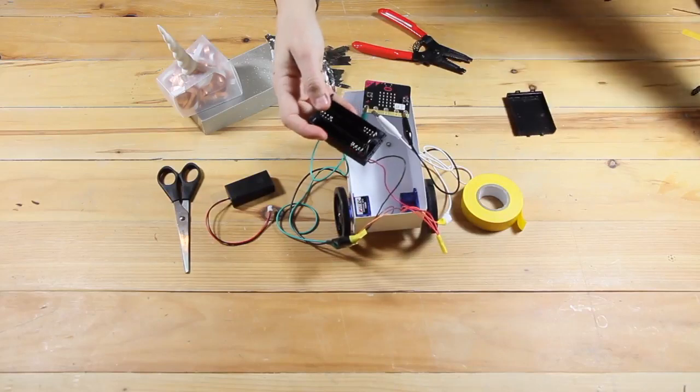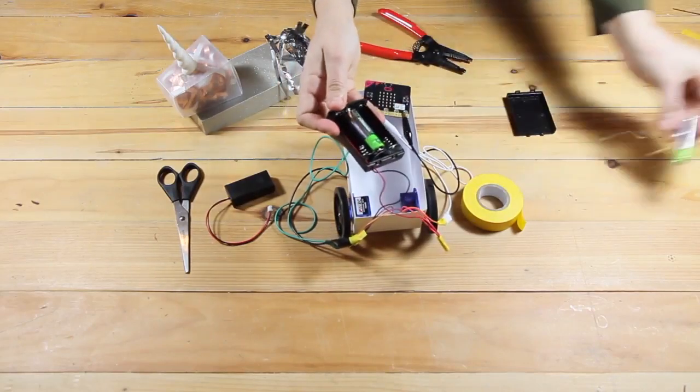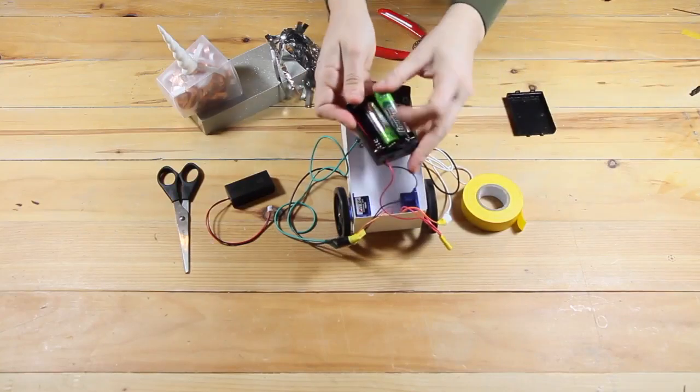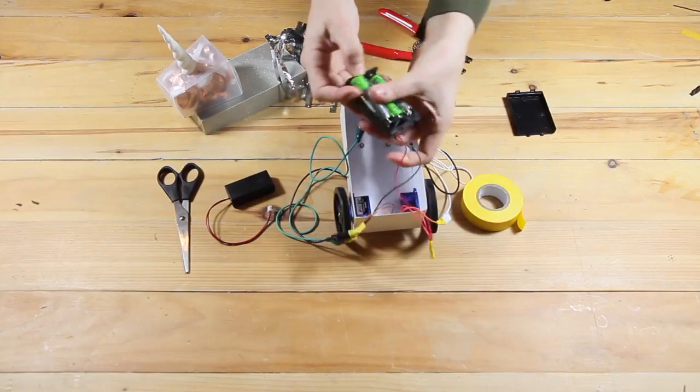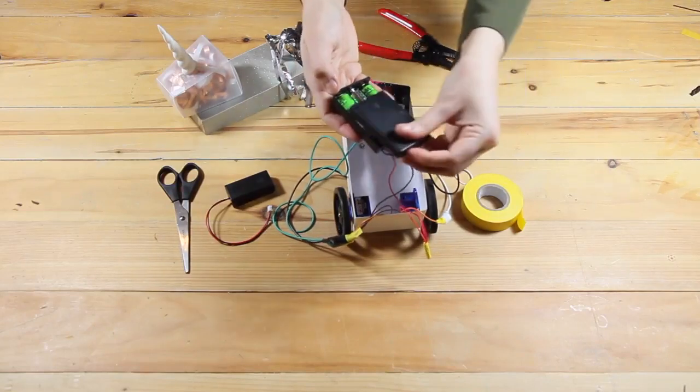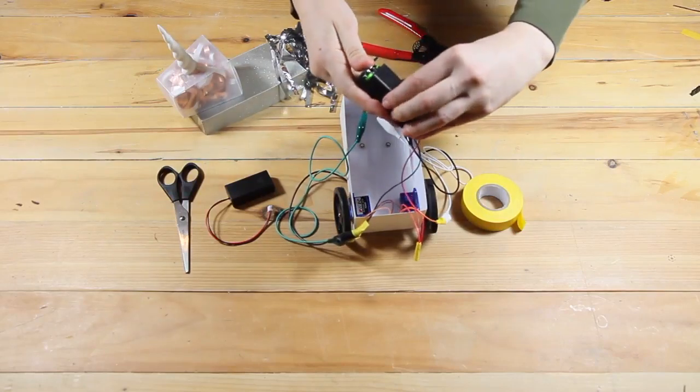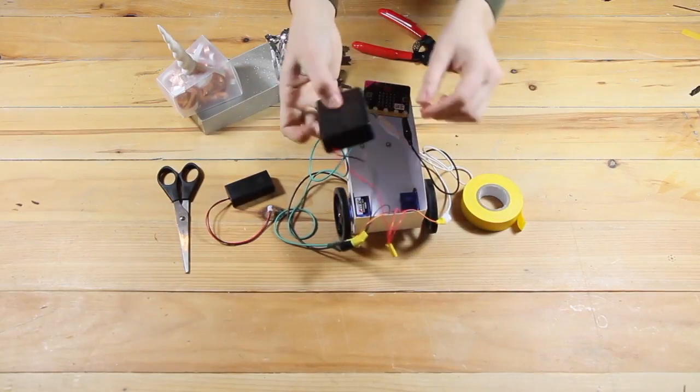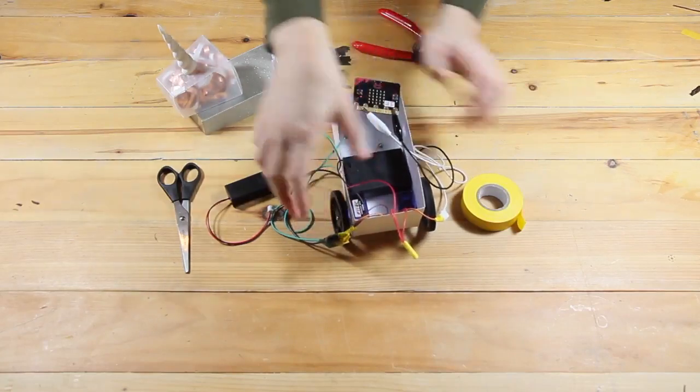All we have to do now to prepare our microbit unicorn for driving around is to pop in the batteries. These are going to power your servos. So when you're ready to use them, make sure that your battery pack is on the on position. When you're not using your robot unicorn, you want to turn your batteries off to preserve power.